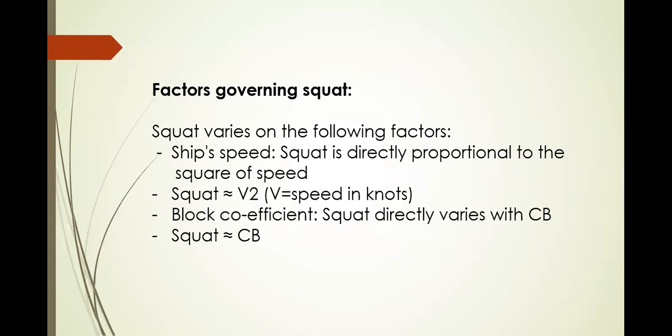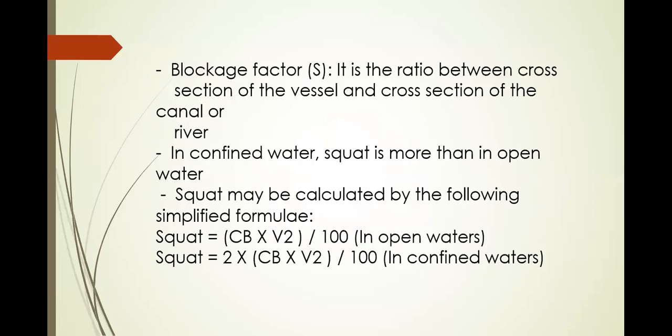Factors governing squat: squat is directly proportional to the square of the speed (velocity squared), and there is an involvement with the block coefficient. In open waters it is 2 times block coefficient times velocity squared divided by 100. This is equivalent to block coefficient times velocity squared divided by 50. It is very confusing with other formulas — many have revised it using ratios and proportions — but use the formula as given.